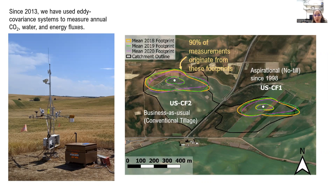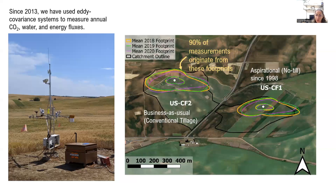The experiment at Cook Agronomy Farm is shown here on the right. It's a paired catchment study. On the right side is Cook East, our aspirational no-till treatment established in 1998, and on the left is the business-as-usual conventional treatment. Our towers, located in each catchment and shown by the white dots, are capturing CO2 moving past the tower sensors, representing fluxes from within the colored lines — that's the area we're able to measure on each field.